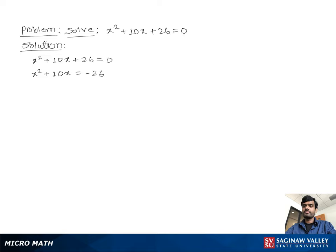Then we add to both sides half of positive 10 and its square. Half of positive 10 is 5, so we write x squared plus 10x plus 5 squared equal to negative 26 plus 5 squared.